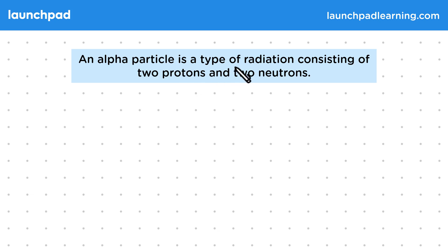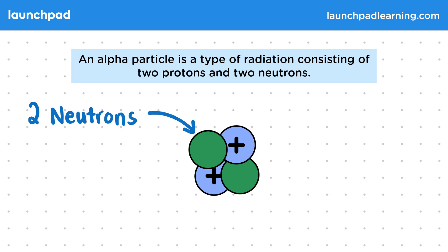An alpha particle is a type of radiation consisting of two protons and two neutrons. Here's a simple diagram representing the alpha particle. It has two neutrons, represented by the green circles, and two protons, represented by the blue circles with a plus. You might notice that this particle is the same as a helium nucleus.